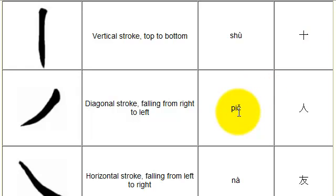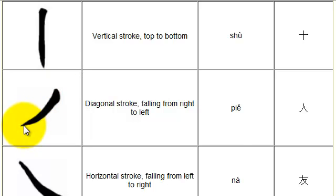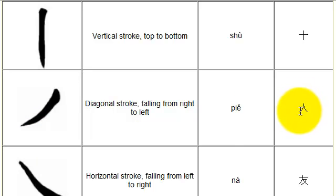Next we have pie. Pie is a diagonal stroke drawn falling from the top right down towards the left. Start with your pen on the paper at the top right and draw it down towards the left. Here you can see an example of pie being used — from the top, down towards the left.